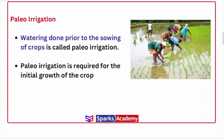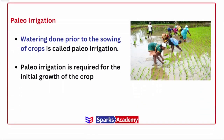What is paleo irrigation? Before we sow seeds in a field, we give one particular watering to prepare the land — that particular irrigation is called paleo irrigation. In other terms, it is the first watering given to the land. So the watering done prior to the sowing of a crop is called paleo irrigation. The corresponding depth of water given during paleo irrigation is called paleo depth.